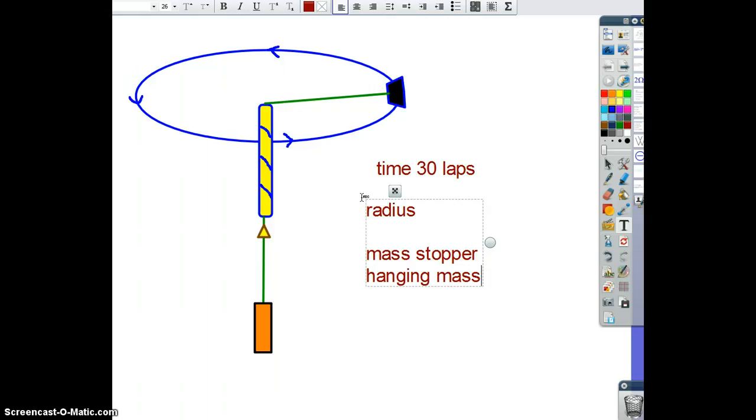So radius, stopper mass, hanging mass, time of the laps. That's the data you're going to gather.